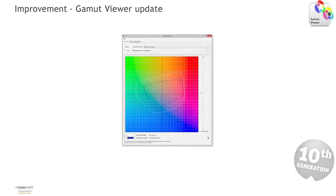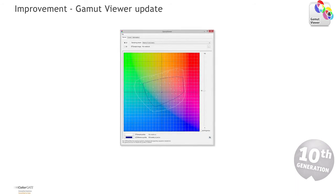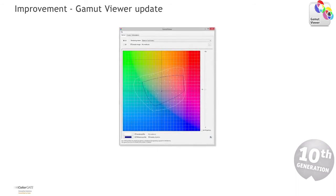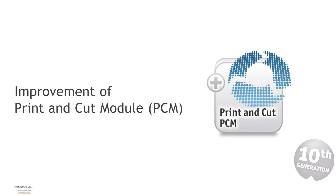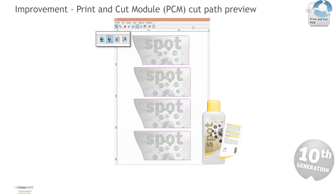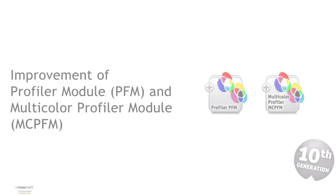The gamut viewer in version 10 has been updated. In general, the visualization of the different ICC color gamuts has been improved, and the precision of multi-color gamuts has been improved too. The cut path preview in the Print and Cut Module is now directly available along with the calculation of the document preview. All relevant document information is displayed for the end user just after the preview calculation.